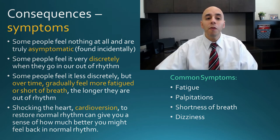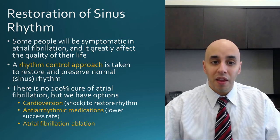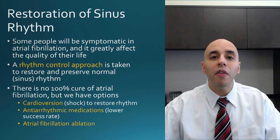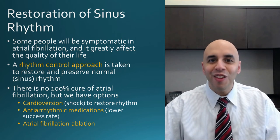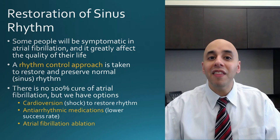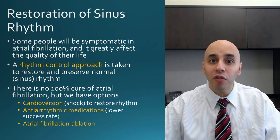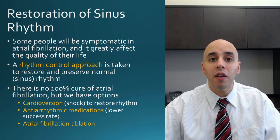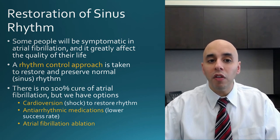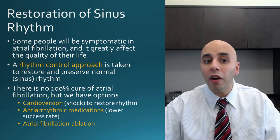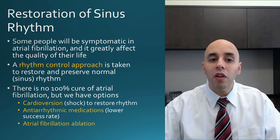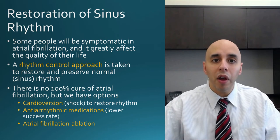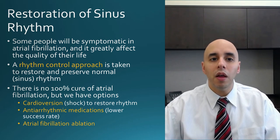For people who feel better in normal rhythm, we restore it — taking what's called a rhythm control approach. Unfortunately, atrial fibrillation is not a curable disease, but it is highly treatable with very effective strategies. We don't have a 100% cure for everyone. The different approaches include shocking the heart with cardioversion, using antiarrhythmic medication, and/or doing an atrial fibrillation ablation. We'll talk about each briefly and then focus more specifically on ablation.